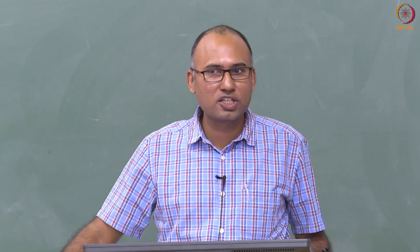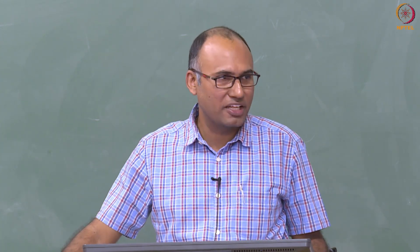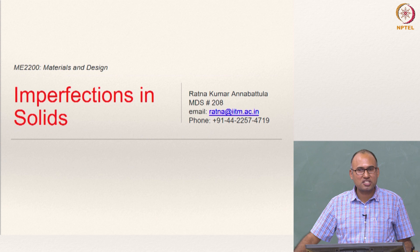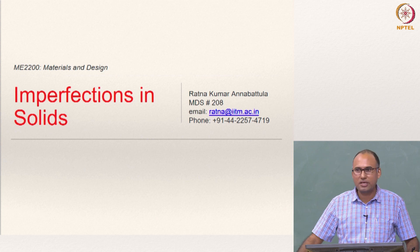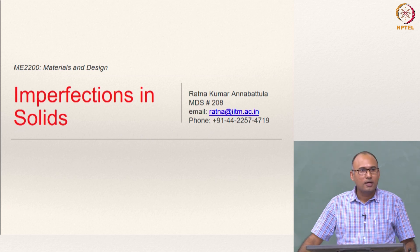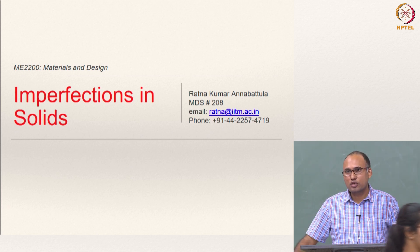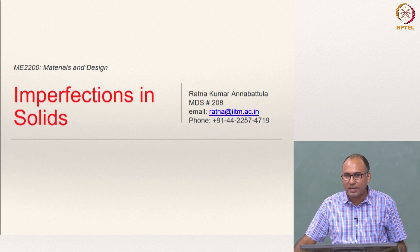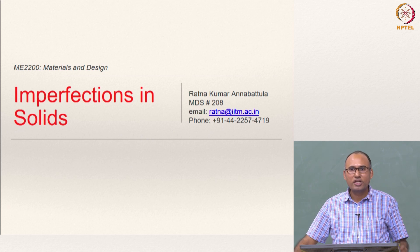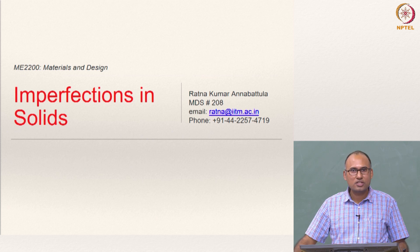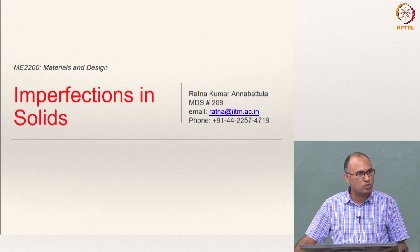So far, what we have looked at is the crystalline structure of materials and how atoms are arranged under different crystalline lattices like FCC, BCC, HCP and so on. We have also discussed the methodology to describe crystallographic directions and planes, how to represent them using Miller indices, and how to use a 4-index notation for HCP as opposed to the 3-index notation used for cubic crystals.